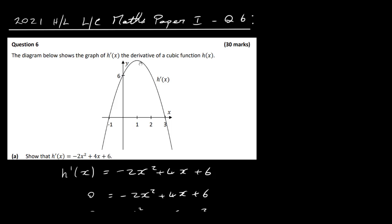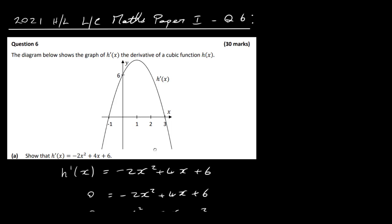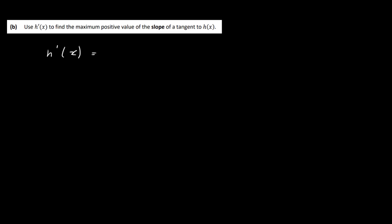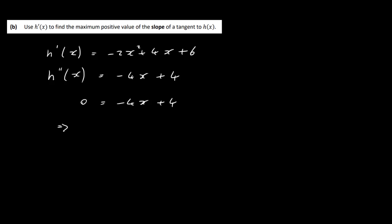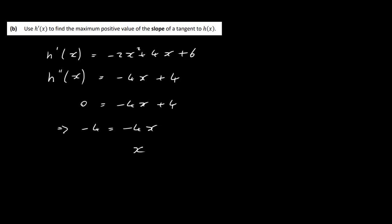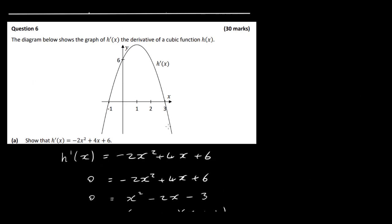There's going to be a maximum value for this function at x equals 1. To confirm this, we take h prime x equals minus 2x squared plus 4x plus 6 and find h double prime x, which is minus 4x plus 4. Setting that equal to 0 gives minus 4x plus 4 equals 0, so x equals 1. That confirms what we guessed from the graph — the maximum is at x equals 1, halfway between minus 1 and 3.